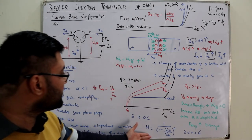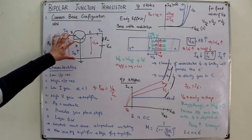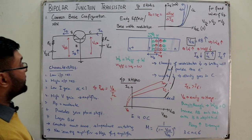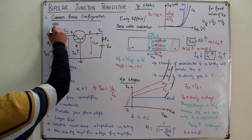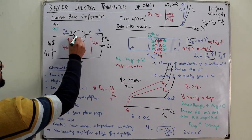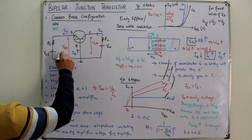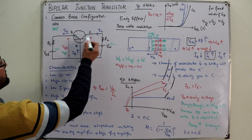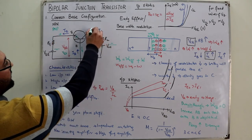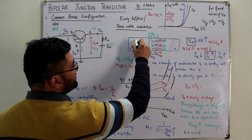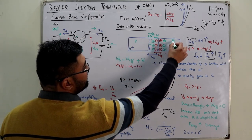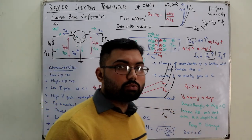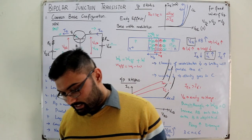The basic concept is that the base is common to input and output — the emitter side is input and the collector side is output. These were for an NPN transistor. A similar analysis applies to a PNP transistor: the arrow reverses, the voltage labels become VEB and VBC, and the polarities and current directions are reversed. Where we talked of electrons, for PNP we talk of holes, and vice versa.